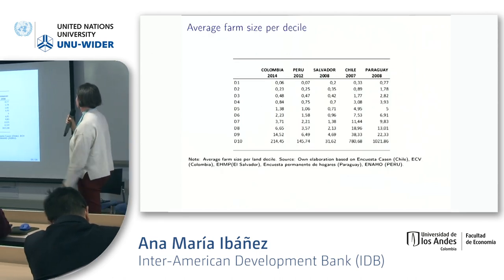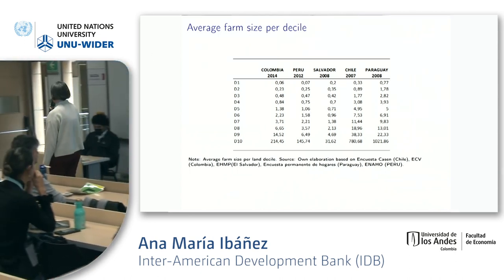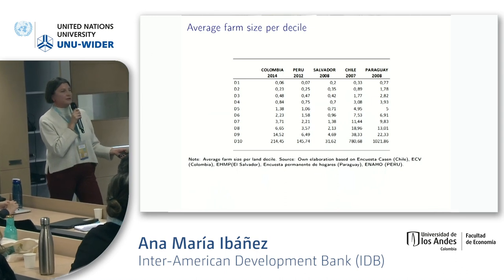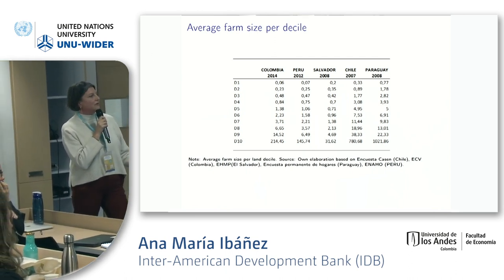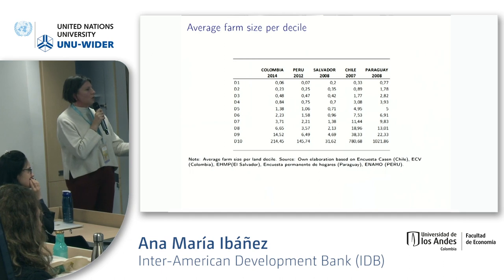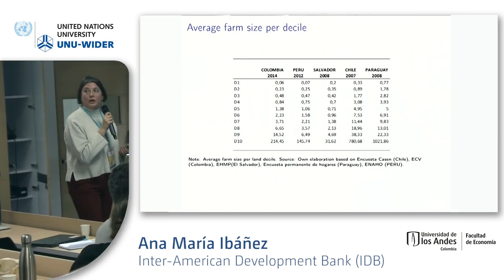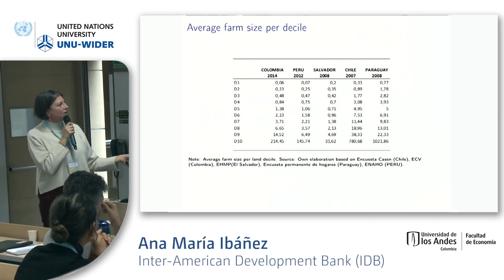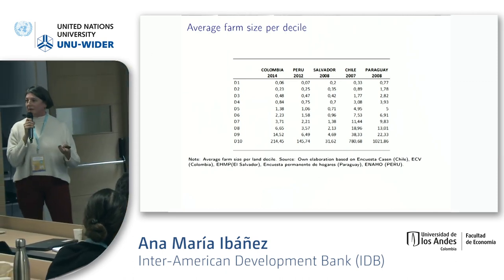Let me show you some preliminary results. This is something I find very striking — this is land distribution by land decile. What you see is that we have a lot of very small farm sizes in Latin America. Going through the deciles, at the 8th decile farms start being a little bit larger, about 6 hectares on average in Colombia, and Peru is very similar. For Chile and Paraguay, which are agricultural exporters, farm sizes are much larger. But there is a bunch of very small farms in the first deciles across all Latin American countries.